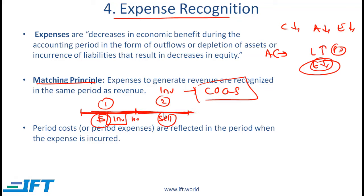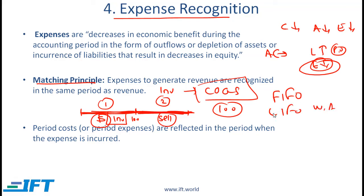So for period 2 in the income statement, you will show a cost of goods sold of 100. That is very simplistically the matching principle — you generate revenue by selling that inventory, the revenue is shown in period 2, so you want to match the expense of 100 with the revenue that came about because of that expense. The curriculum also covers concepts like first in first out, last in first out, and weighted average for inventory, but those are covered in detail in a later reading on inventory.